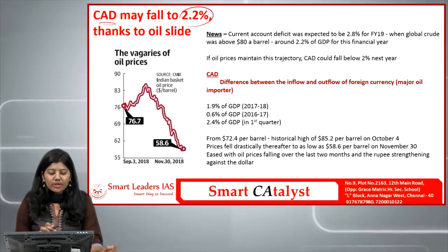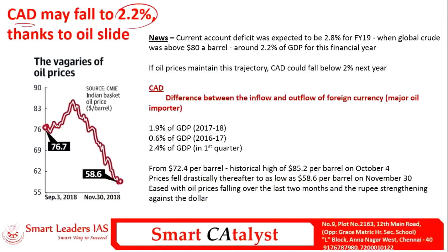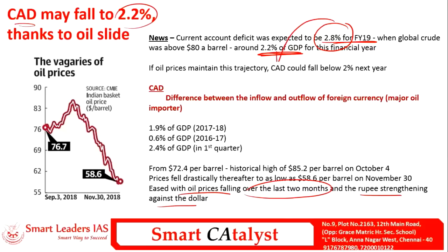The first article is current account deficit may fall to 2.2 percent. Analysts and researchers have recently revised the CAD to 2.2 percent because previously they estimated it would be nearly 2.8 percent for financial year 2018-19. Due to oil prices falling over the last two months and the rupee strengthening against the dollar, they revised the CAD from 2.8 percent to 2.2 percent.